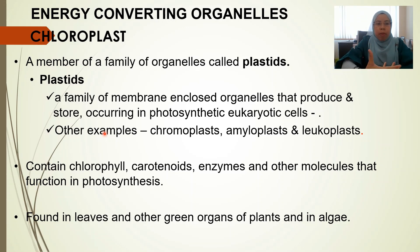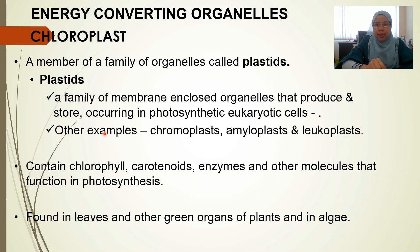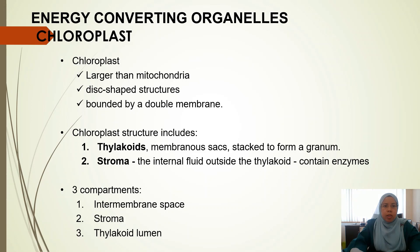Chloroplasts also contain a variety of light-absorbing yellow and orange pigments known as carotenoids. Chloroplasts are larger than mitochondria. They have a disc-shaped structure and are bounded by a double membrane.